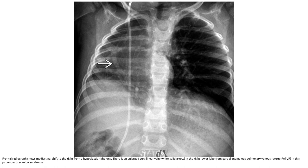Frontal radiographs demonstrate mediastinal shift to the right from a hypoplastic right lung. There is an enlarged curvilinear opacity in the right lung from the partial anomalous pulmonary venous return in this patient with Scimitar Syndrome.